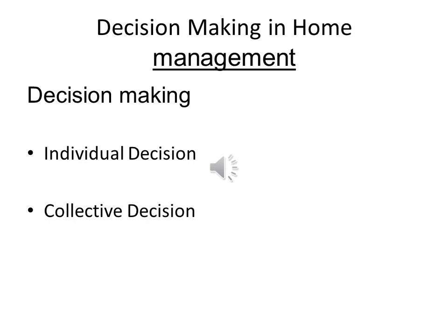So there are two types of decision making: individual decision making and collective decision making.